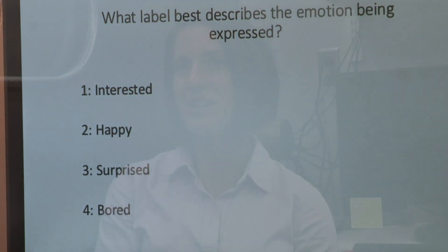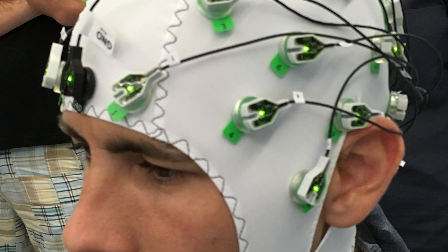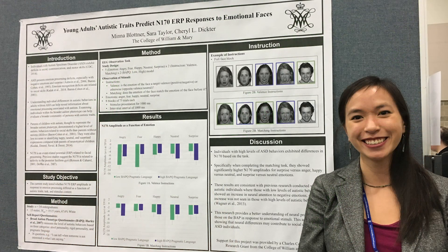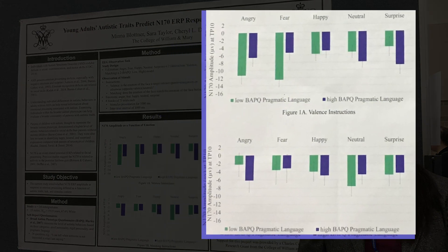We have some really sophisticated equipment here to look at brain activity and eye tracking, which are really key to understanding emotional processing — one of the things that we're studying. We have access to student populations here who vary all along the spectrum, so we're able to recruit students, measure their brain activity and reaction time while they're looking at videos and pictures, and quantify the differences as a function of their autistic traits.